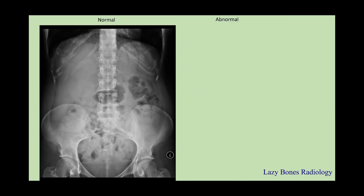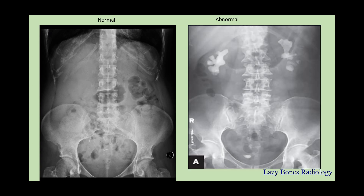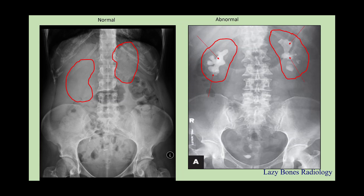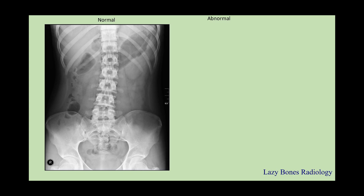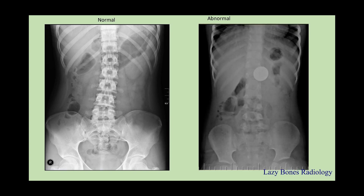Here's a normal abdominal x-ray and here's an abnormal one. Let's highlight the kidneys — as you can see on the right-hand side, these are staghorn kidney stones. Let's try this one: as you can see on the right-hand side, the abdomen is completely filled with air, which is known as a large bowel obstruction. Let's try this one — this is really interesting. This is known as a foreign body, or a coin, very common among children.